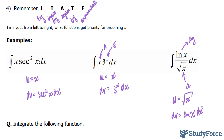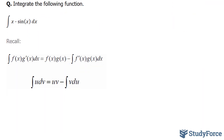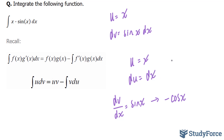Let's do an example now where we will actually integrate a function by parts. The example that we have is: integrate x times sine x dx. We know what to assign our u — our u will be x, and our dv will be sin x dx. Now I'll find the derivative of u. The derivative of u gives us du, and this becomes 1, so du is equal to dx. For dv, recall that dv over dx is equal to sin x, and if we integrate that we will end up with negative cosine x.